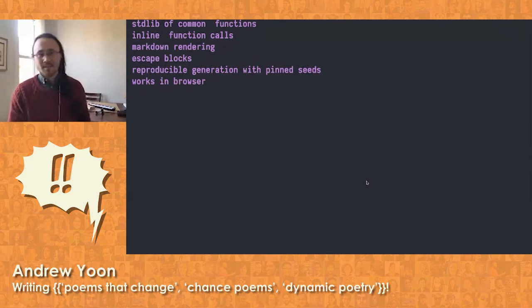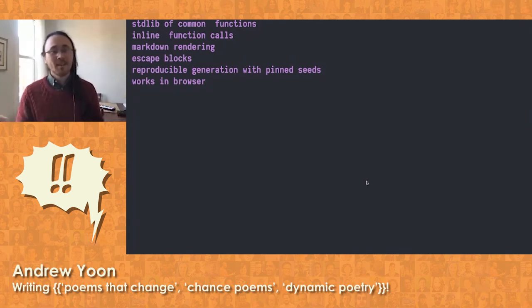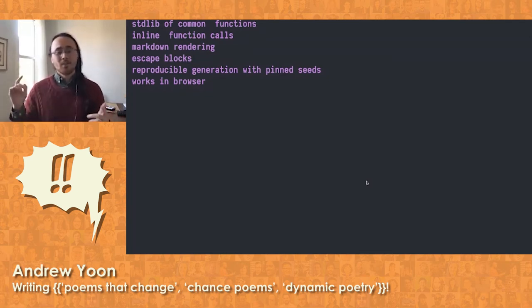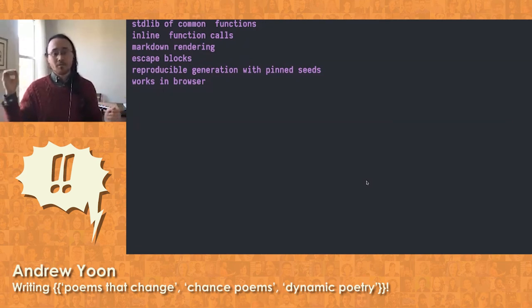It can do a bunch of other things. So we have a standard library of common functions, standard library, it's actually like three functions, but they're useful things to have around that are then available inside the eval API. We can call inline function calls, we can do markdown rendering, we can escape blocks and have literal text blocks. And we can also reproducibly generate the same text by pinning a seed.